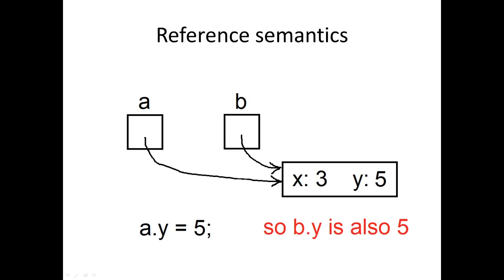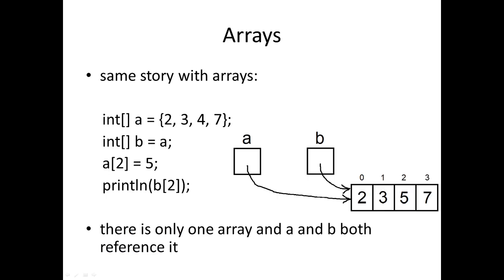So now when we change the y component of a to 5, we can see that we're also changing the PVector memory block that b is referencing. So not surprisingly, b comes out to be 5 as well. Now we move on to arrays.